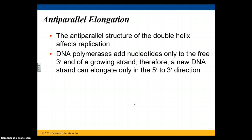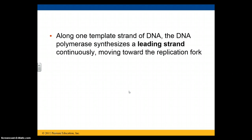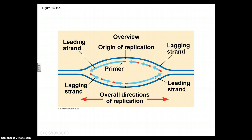The anti-parallel structure of the double helix has an effect on replication. DNA polymerases add nucleotides only to the free 3' end of a growing strand, so a new DNA strand elongates from the 5' end towards the 3' end — always 5' to 3'. Along one template strand of DNA, the DNA polymerase synthesizes a leading strand continuously, moving towards the replication fork. On this side, you have a leading strand.